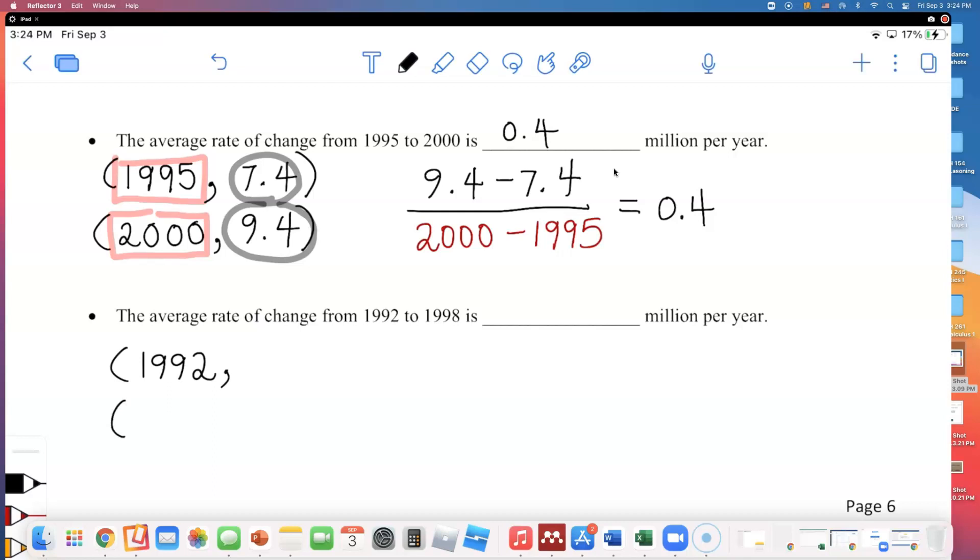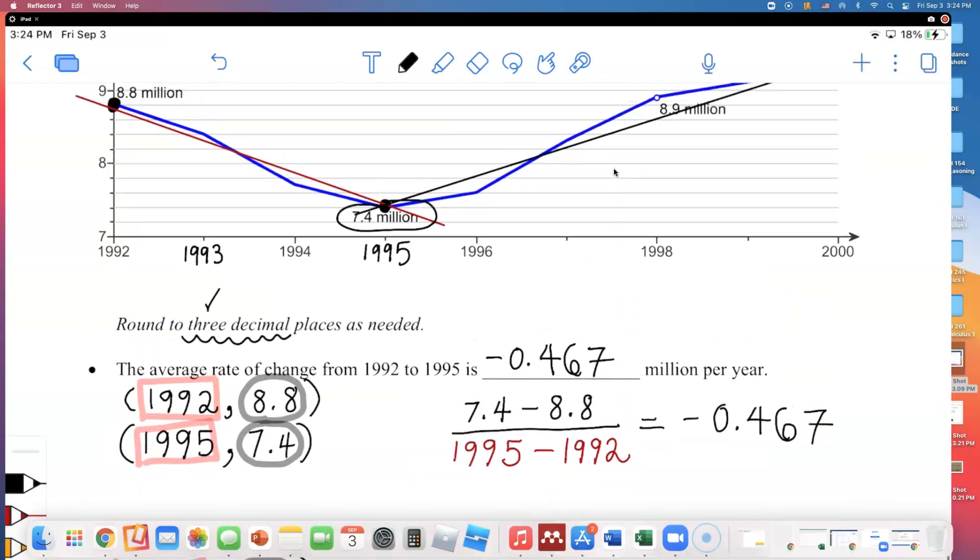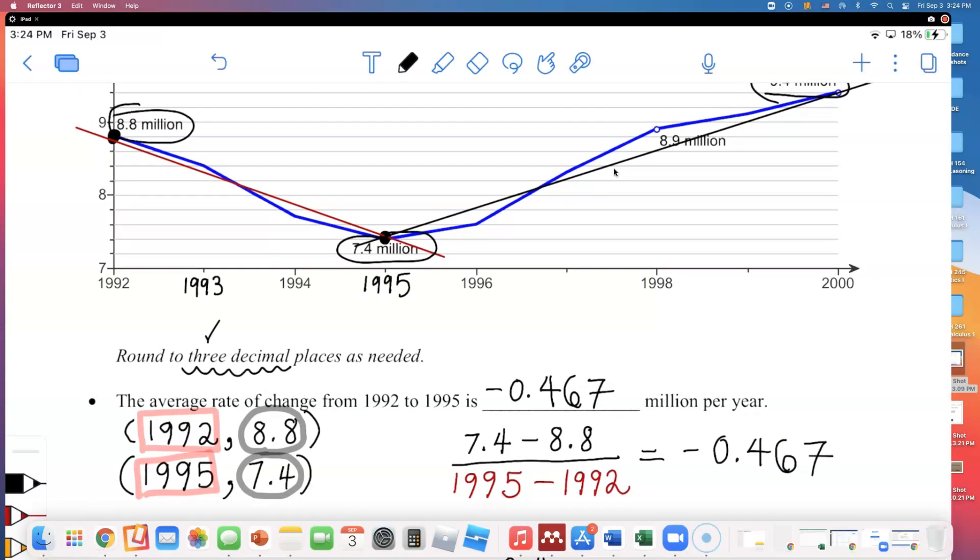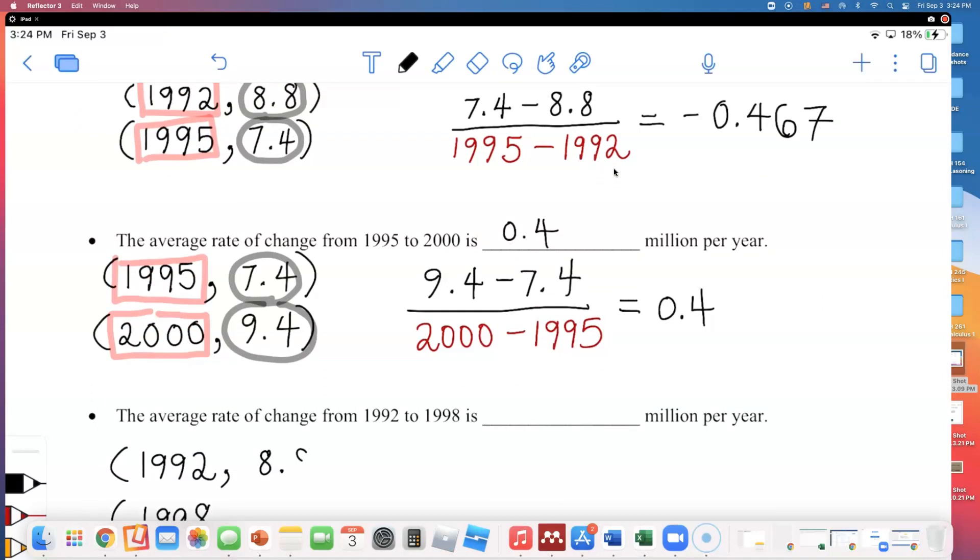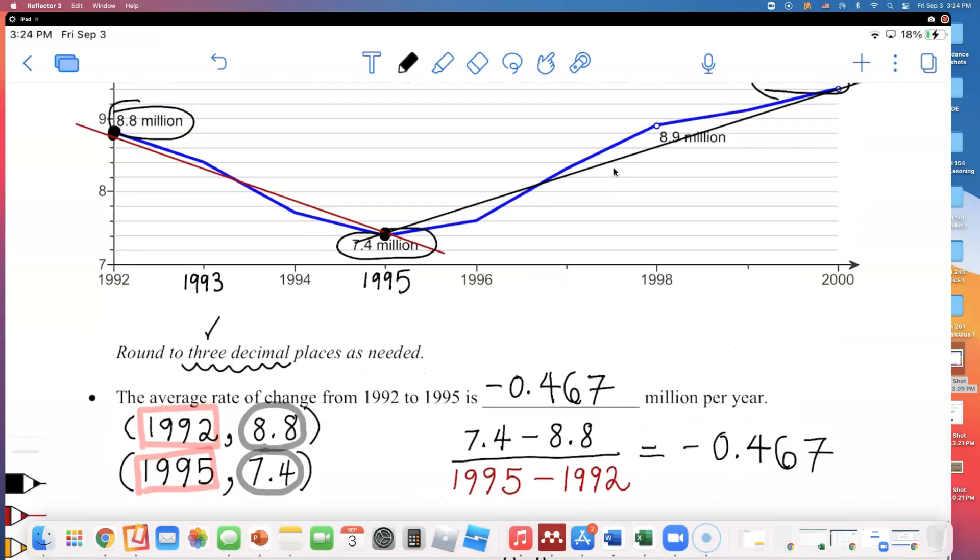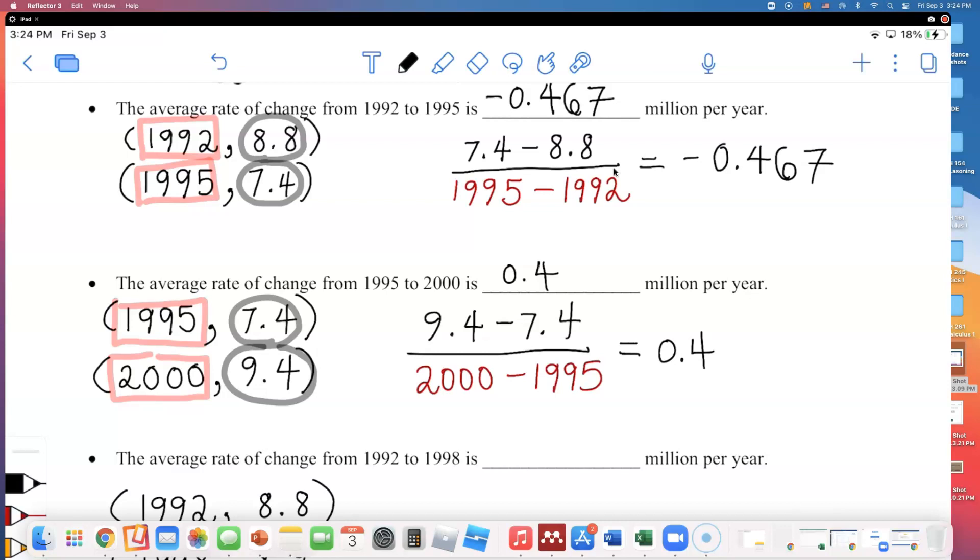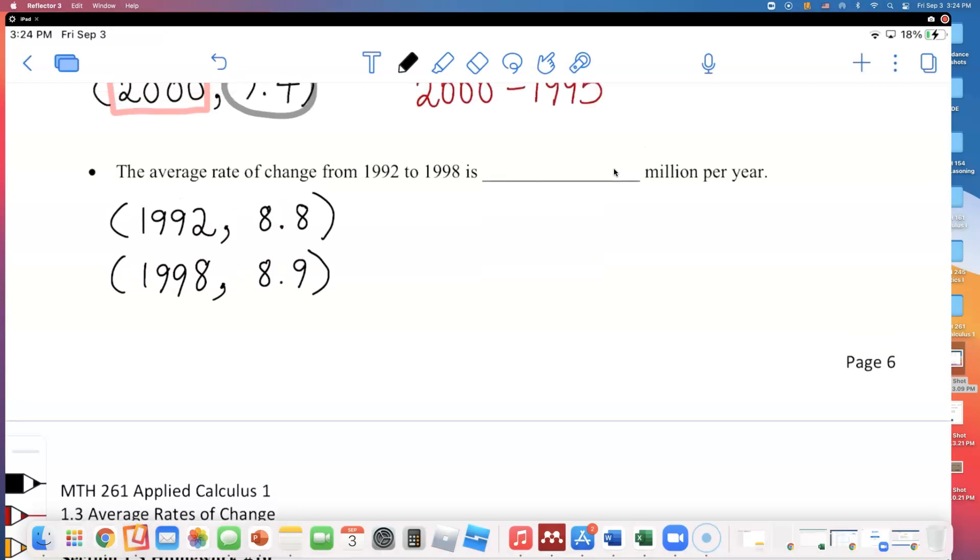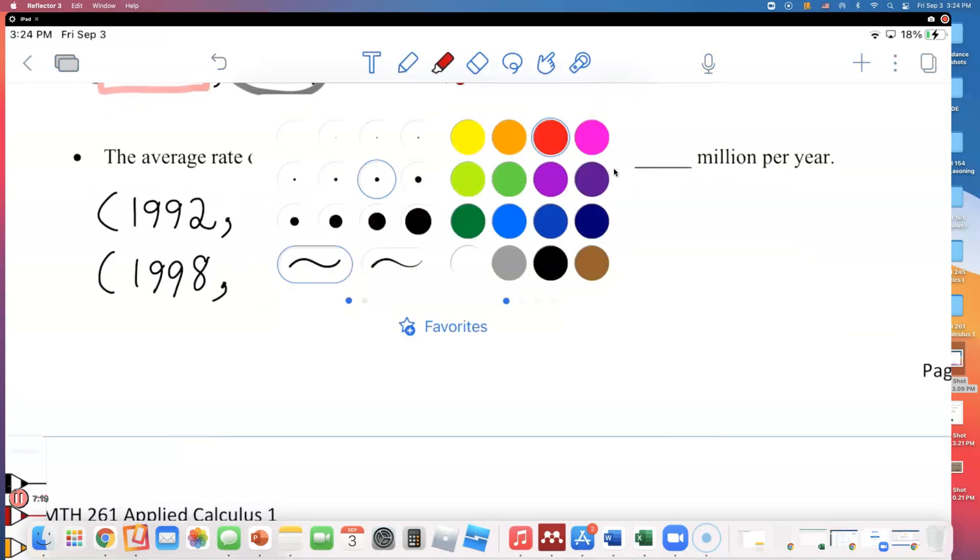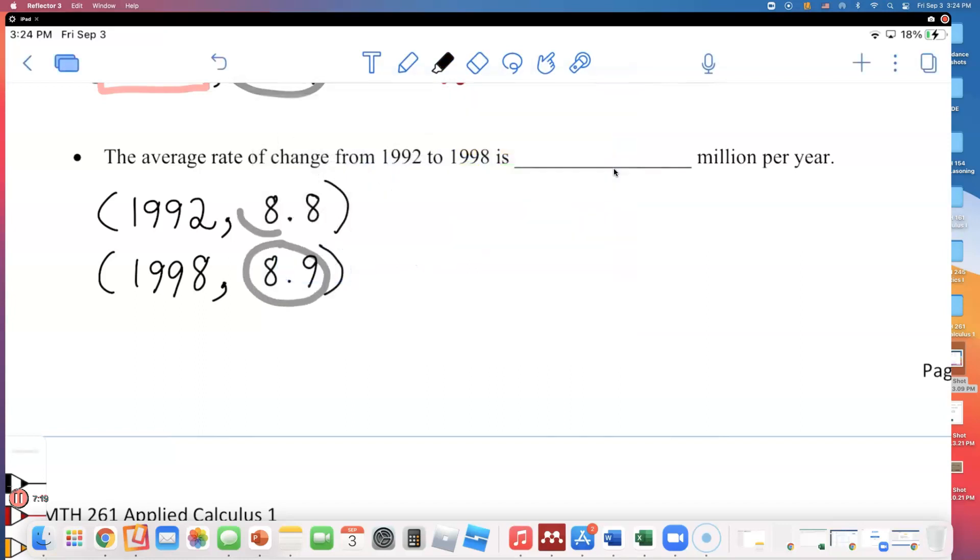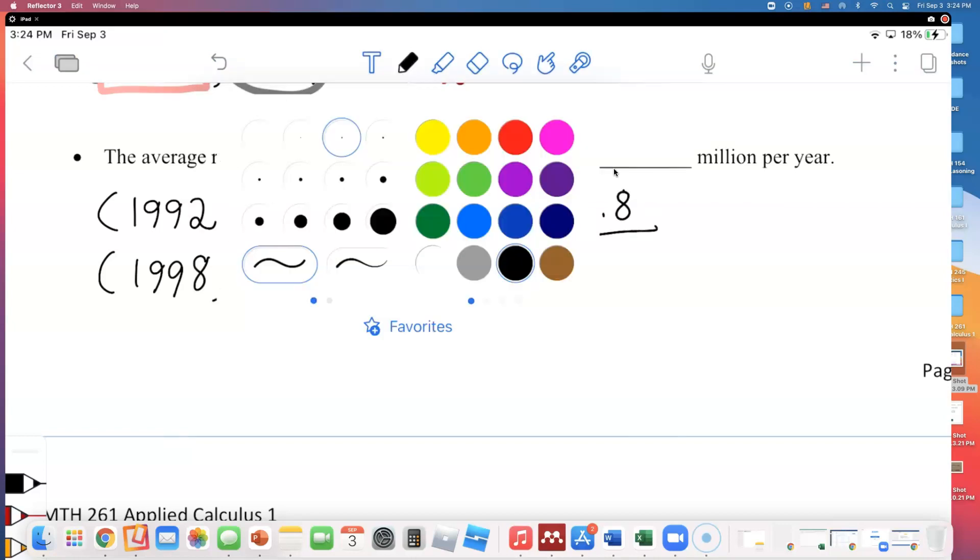How about the average rate of change from 1992, that's the first x coordinate, to 1998? I need to go and look at their y values, or the number of trips taken in those years. So for 1992, that number is 8.8 million. For 1998, the number of trips is 8.9 million. So let's set up the average rate of change formula.